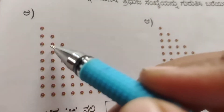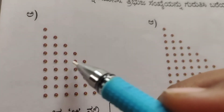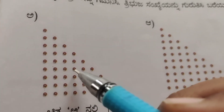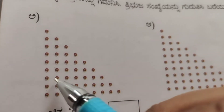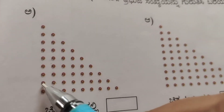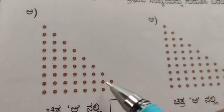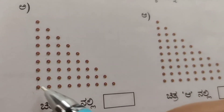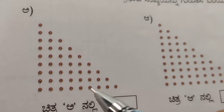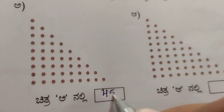Counting dots in the first triangular figure from 1 through 45 — so the triangular number here is 45.